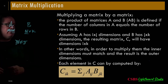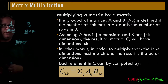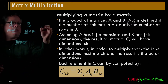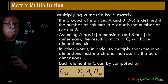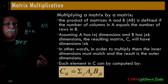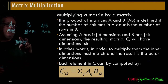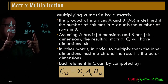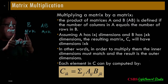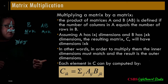Assuming A has I by J dimensions and B has J by K, the resulting matrix C will have dimensions I by K — the outer dimensions. In other words, to multiply them, the inner dimensions must match, and the result has the outer dimensions. A times B would have M by K dimensions.